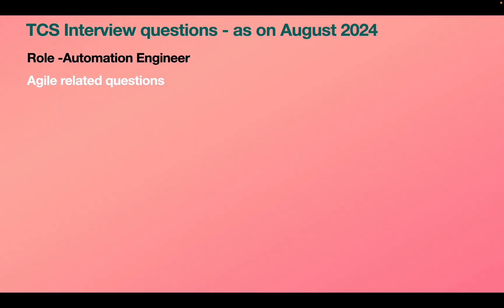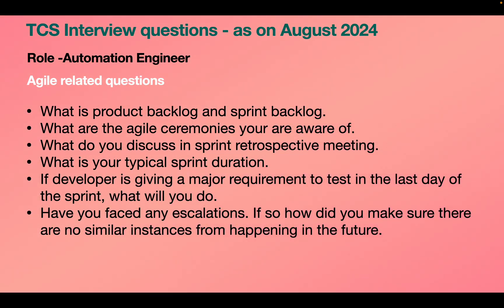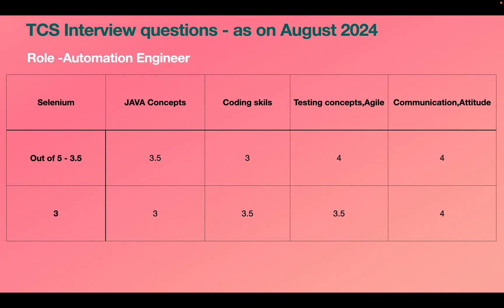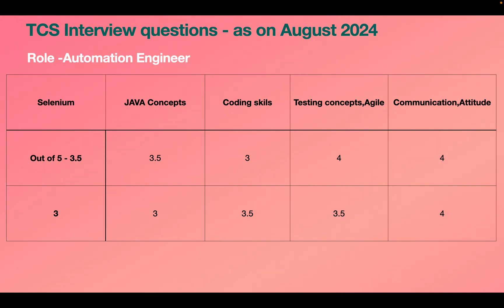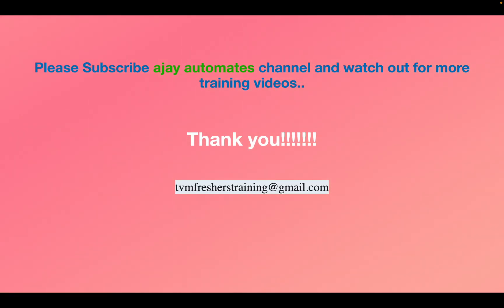There were also Agile-related questions: what is a backlog, what do you do in a retrospective meeting or daily scrum meeting — these are common across all interviews. After the interview, candidates are evaluated on communication, attitude, manual testing concepts (scoring four is expected), and automation concepts. Scoring 3 or 3.5 in most areas is acceptable to clear the first round and proceed to the HR round. Prepare well, subscribe to the channel, and you can email for training at tvmfresherstraining@gmail.com.